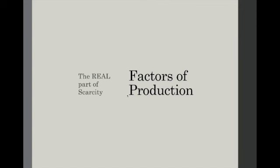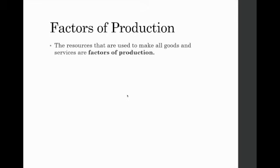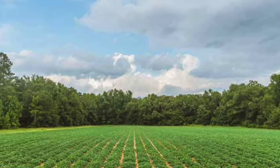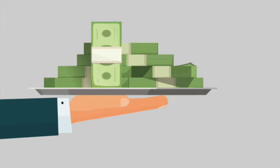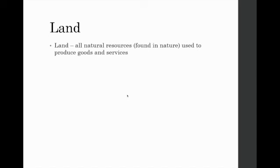When we think about what scarcity applies to, it has to do with what we call factors of production. Factors of production will be referred to many times in economics - it's anything that goes into goods and services, the base elements that are categorized in three basic categories: land, labor, and capital.